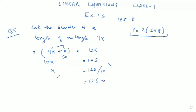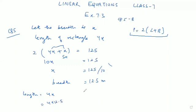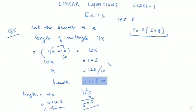So breadth is coming out to be 12.5 meters. Now the length of the rectangle would become 4x, meaning 4 into 12.5. Multiply it: 12.5 into 4 equals 50. So breadth is equal to 12.5 meters and length is equal to 50 meters. These are both the answers.